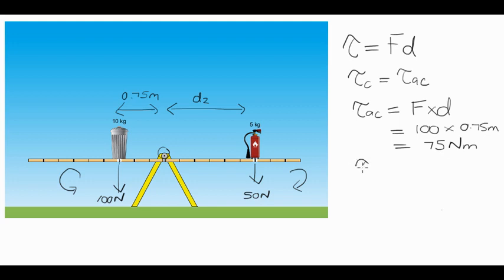Torques clockwise, we've got the 5 kilogram fire extinguisher at a distance d2. That's a force of 50 newtons, so we've got force times d2, which is 50 newtons times d2. Now we know that torques clockwise have to equal torques anti-clockwise, which means that 50d2 has to equal 75.